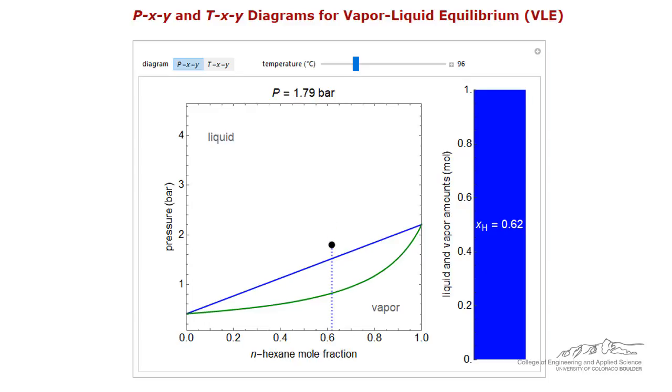As the pressure is reduced, we move downward along a vertical line. When we touch the blue line, we are at the bubble point. We can draw a tie line over to the vapor phase, which is green in this simulation.